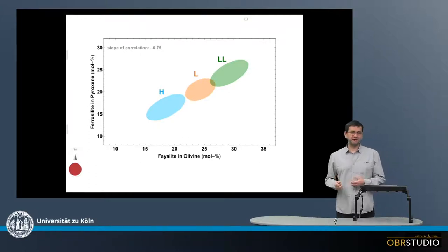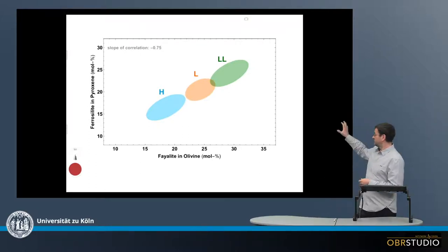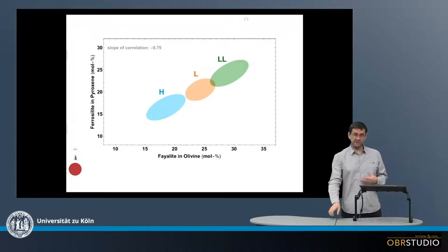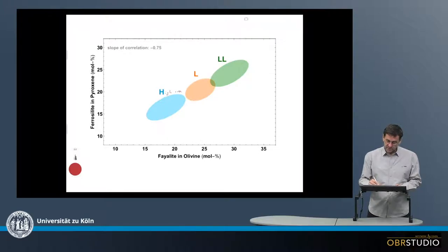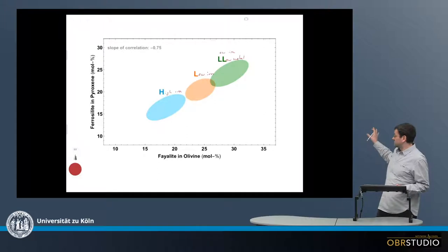The ordinary chondrites are classified into three types, and this is typically done using this plot here. First, what are the three types of ordinary chondrites? There are the high iron (H), the low iron (L), and the low iron, low metal (LL) ordinary chondrites.